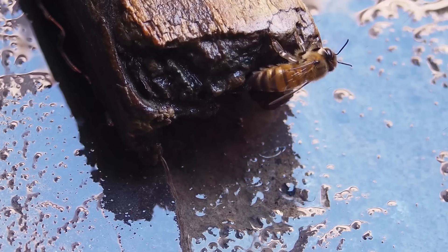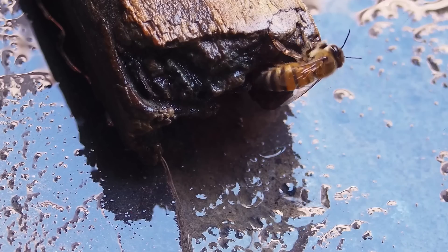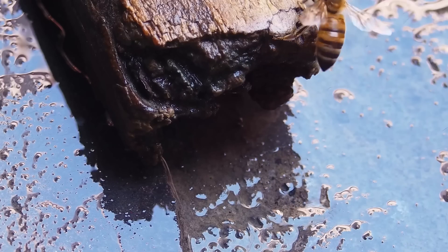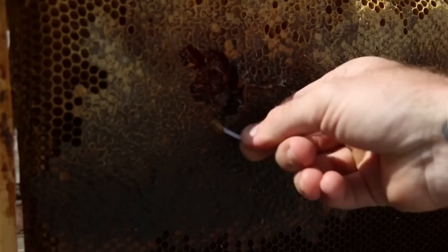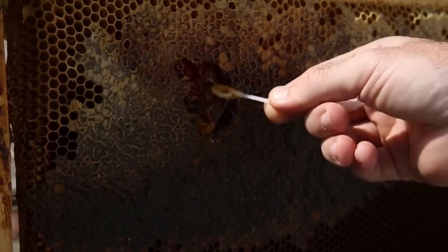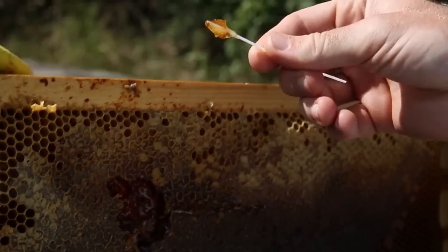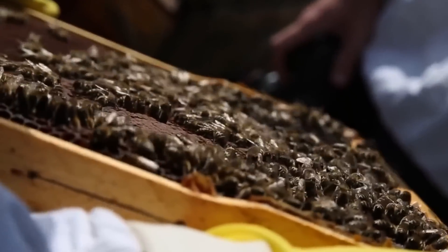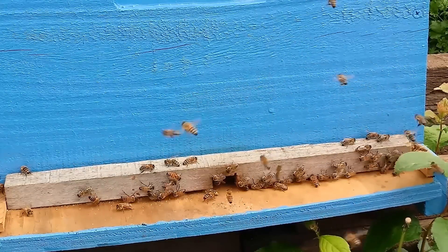Some attractants that have been used are weak salt solutions, a teaspoon of chlorine bleach, lemon grass oil, or even some ground oysters. Once the bees are accustomed to your source of water, you can stop adding your attractant.